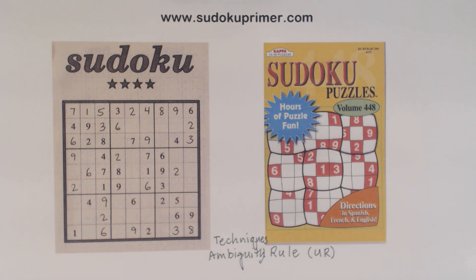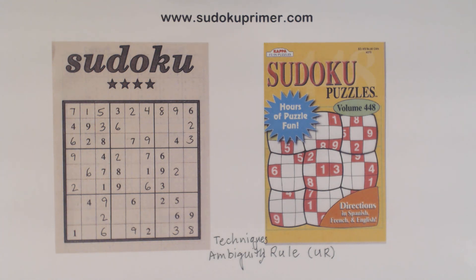This puzzle is partially completed and we're stuck. We'll first find unique rectangles and then we'll use them in a unique way to find two numbers. You can stop the video and see if you can spot the URs before I point them out. I thought they were difficult to find before I noticed them — let me know in the comments if you are able to see them yourself.